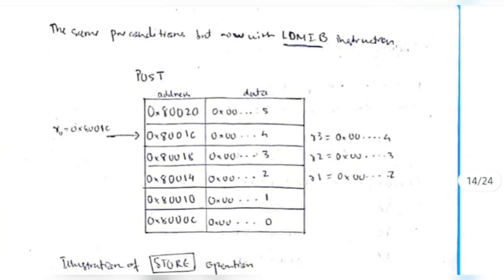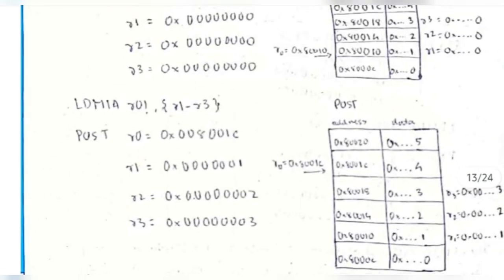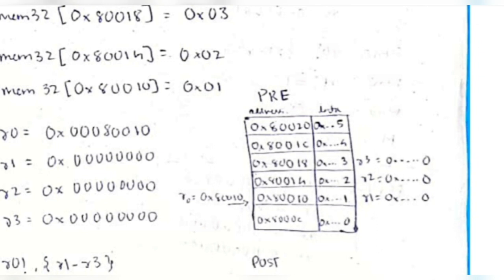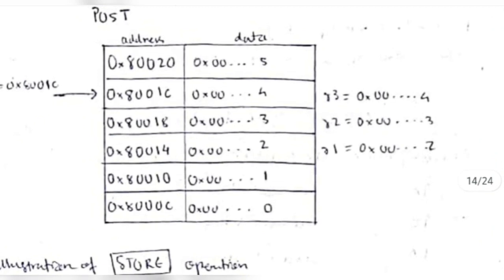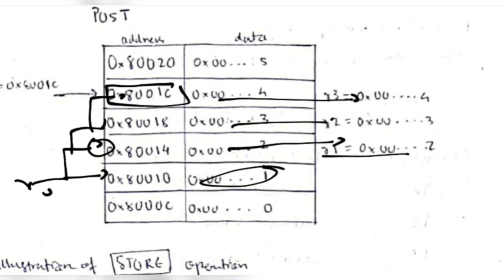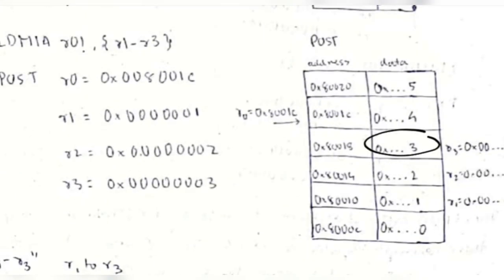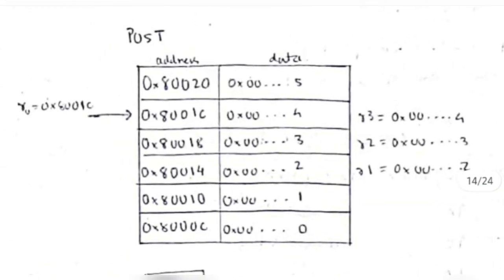LDMIB (increment before) increments the pointer first, then loads the value. So if r0 starts at 0x0010, it increments to 0x0014 first, loads that value into r1, then increments to 0x0018 and loads into r2. The pointer ends at the last loaded location. Decrement modes (DA, DB) work similarly but in reverse, used when arrays are stored in decreasing address order.